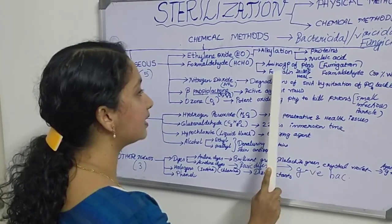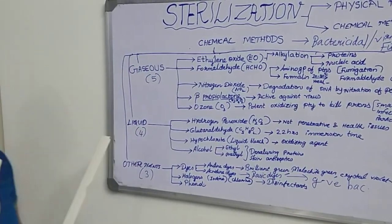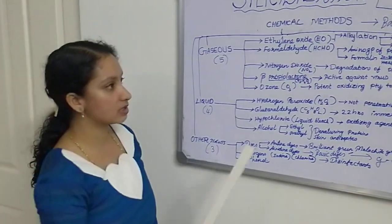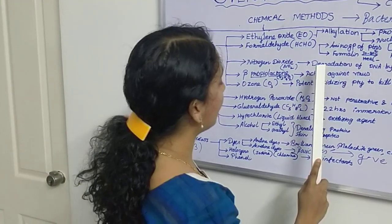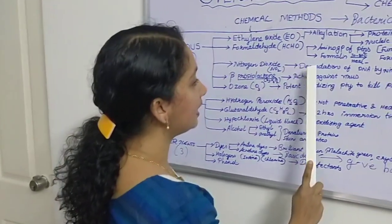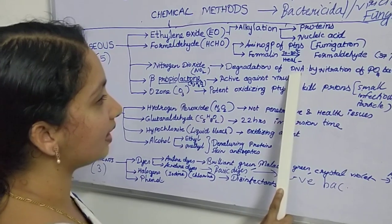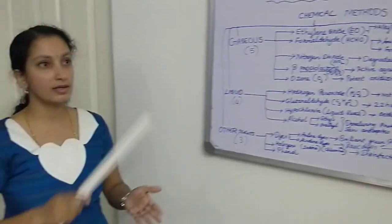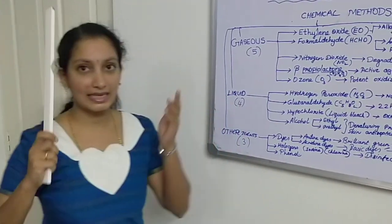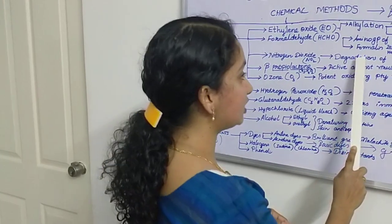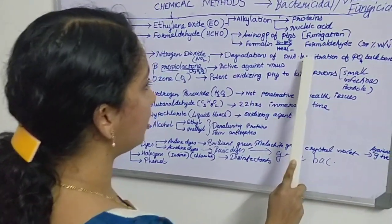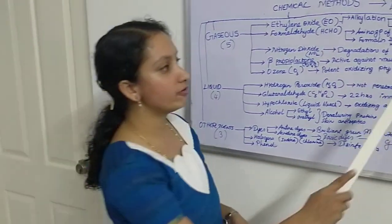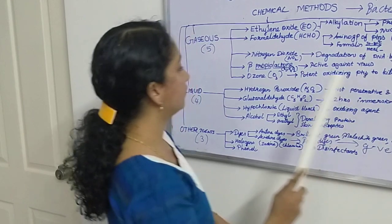The third gaseous agent is nitrogen dioxide (NO₂), which is a pollutant gas. The mechanism behind nitrogen dioxide is degradation of DNA by nitration of the phosphate backbone. Nitration means the addition of nitro groups to the phosphate backbone, which degrades and kills the microorganism.